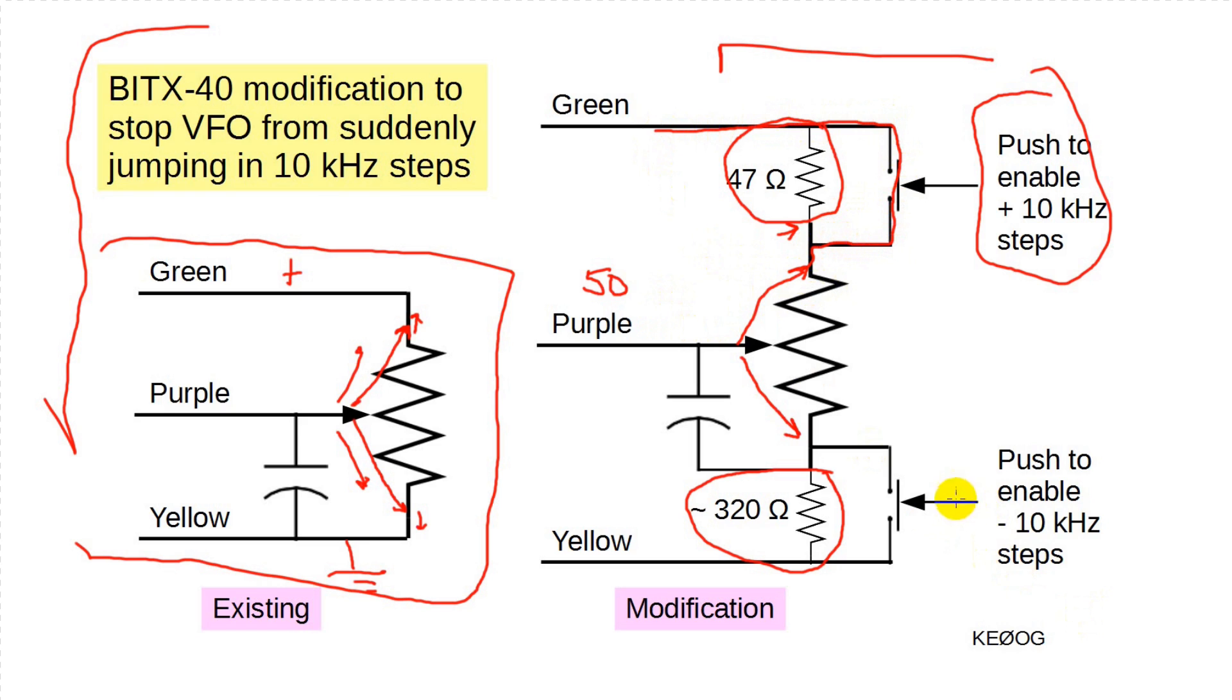Similarly, if the pot is turned all the way down, pressing the bottom galloping enable button allows stepping down in 10 kilohertz steps.